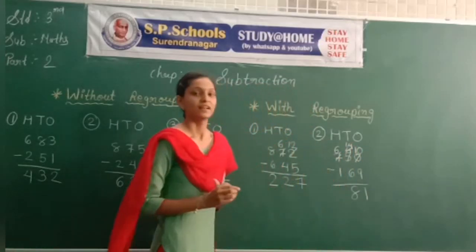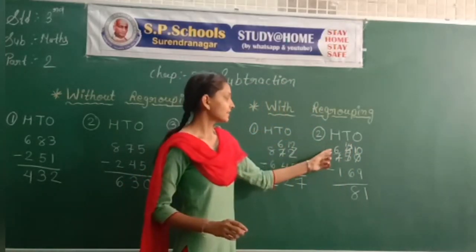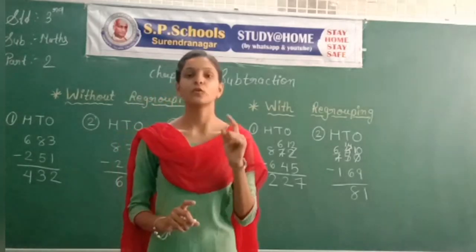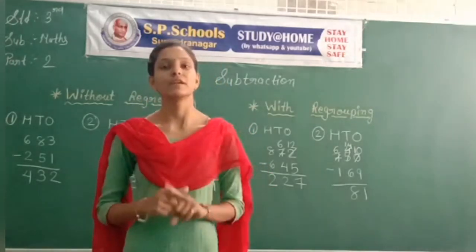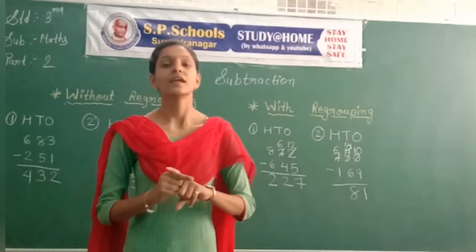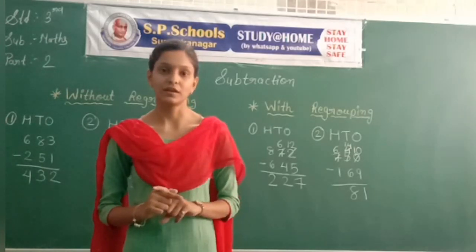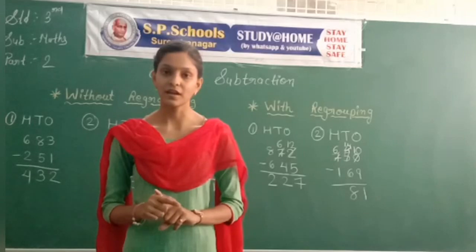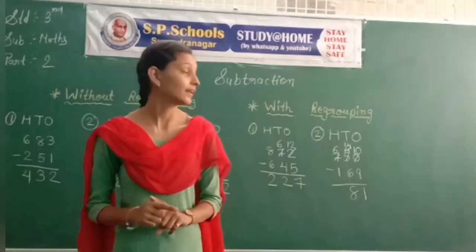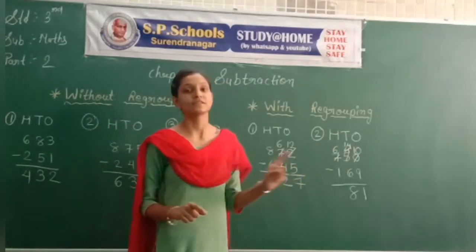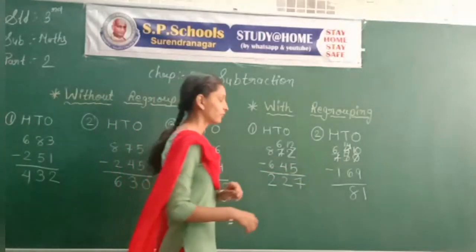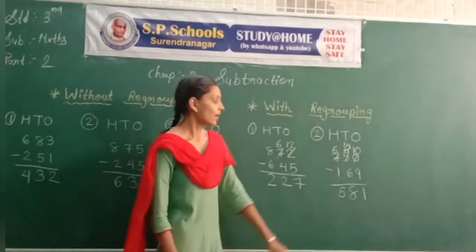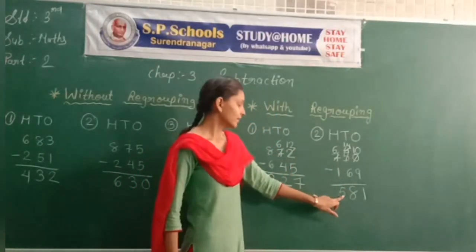Answer 8. Then hundreds place: 6 minus 1. That's easy — the before number shortcut. 6 minus 1: 6's before number is 5. So answer is 5. And the final answer is 580.